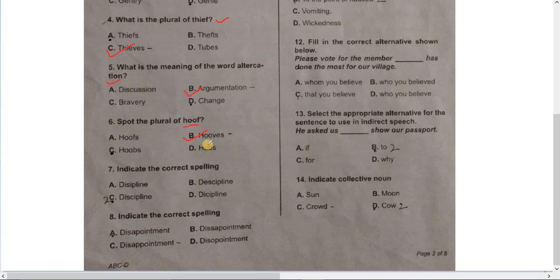Number 7, indicate the correct spelling. Discipline. Number 8, indicate the correct spelling: Disappointment. D-I-S-A-P-P-O-I-N-T-M-E-N-T.